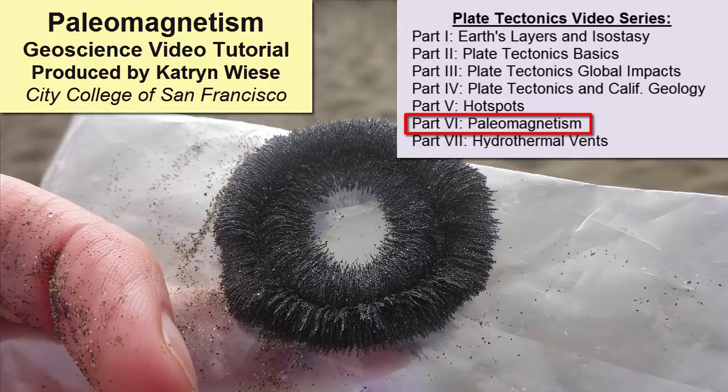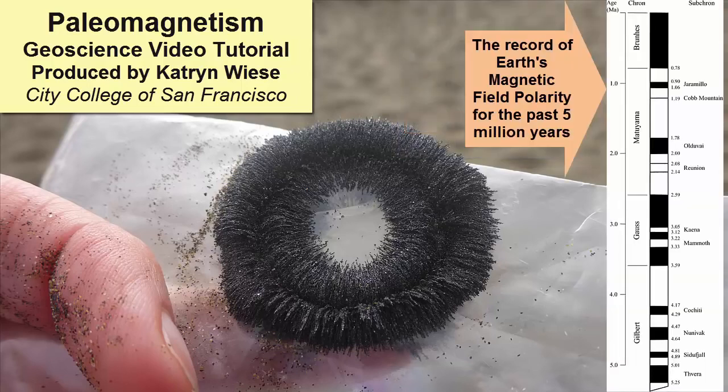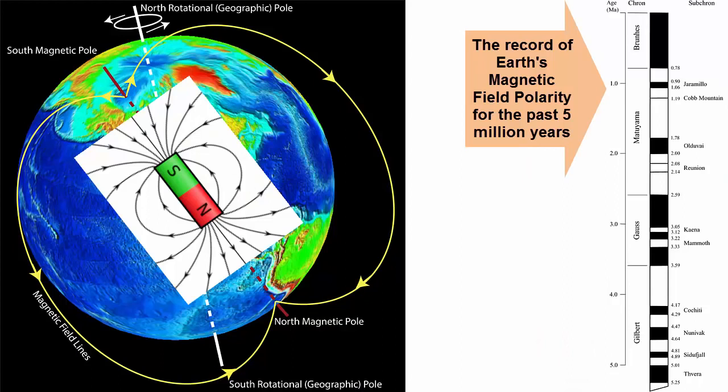The other tool we use to study plate motion and direction is paleomagnetism, or the record of ancient magnetism recorded in the rocks. To understand how, we first have to review how Earth's magnetic field is produced.